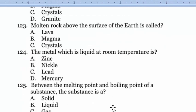Question 123: Molten rock above the surface of the Earth is called lava. Question 124: The metal which is liquid at room temperature is mercury. This is very repeated.